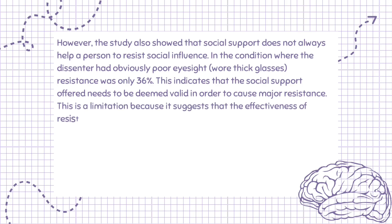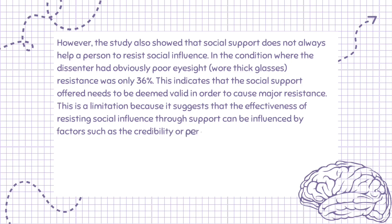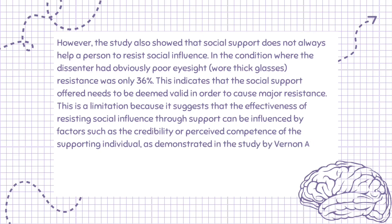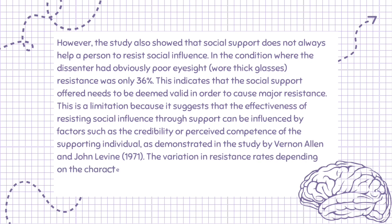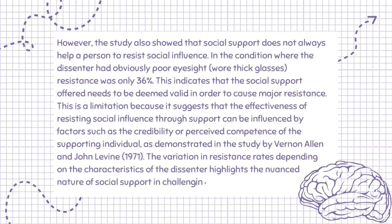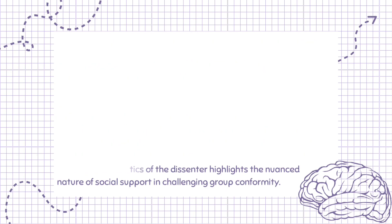This is a limitation because it suggests that the effectiveness of resisting social influence through support can be influenced by factors such as the credibility or perceived competence of the supporting individual, as demonstrated by Vernon Allen and John Levine (1971). The variation in resistance rates depending on the characteristics of the dissenter highlights the nuanced nature of social support in challenging group conformity.